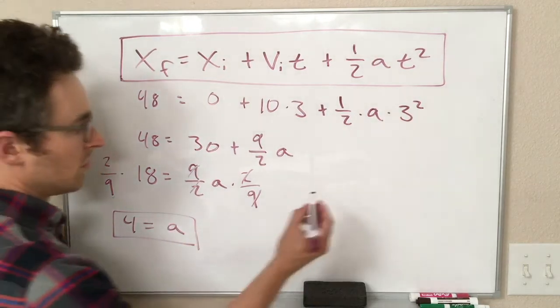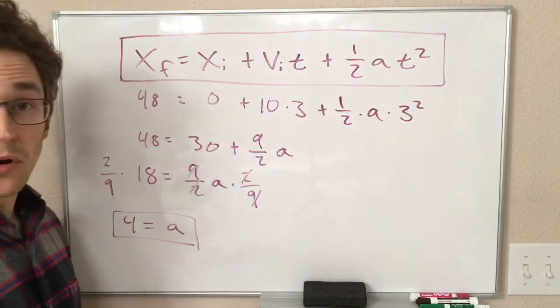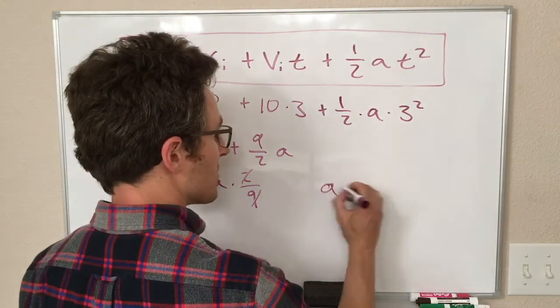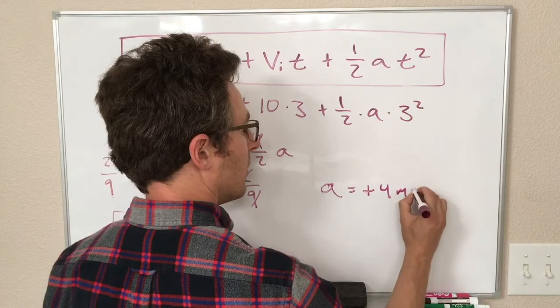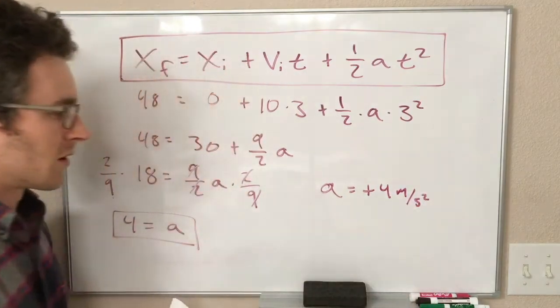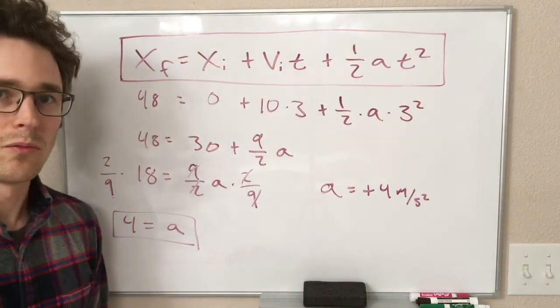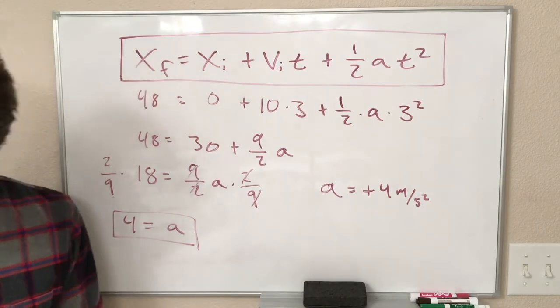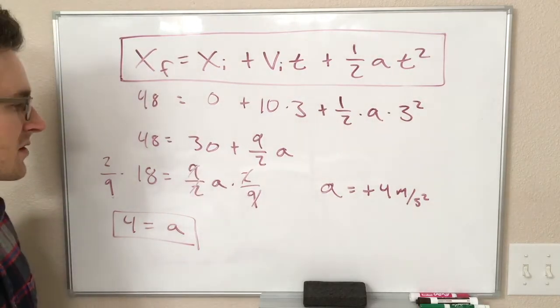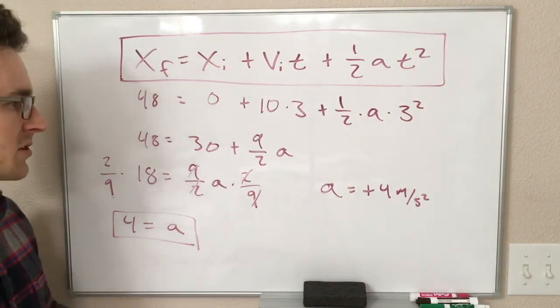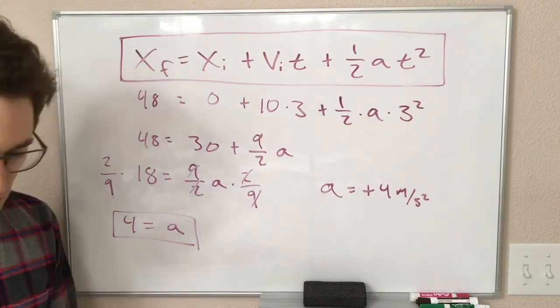So I get my acceleration is 4, which is just a number. In physics land, that means our acceleration is plus 4 meters per second squared. Our acceleration is to the right, 4 meters per second squared. Alright, hopefully that's a useful thing to do to see how the numbers fit into this equation.